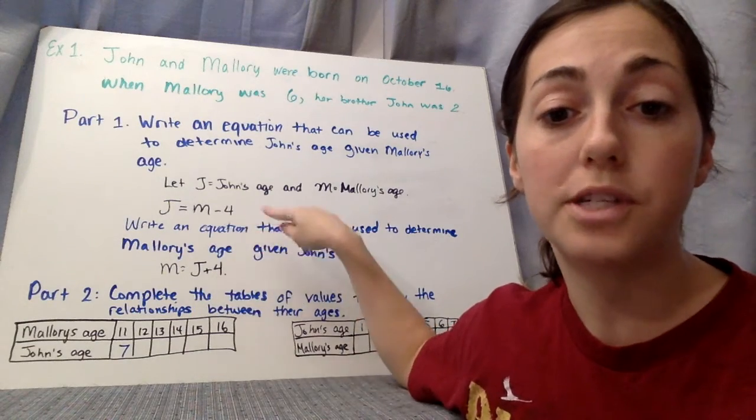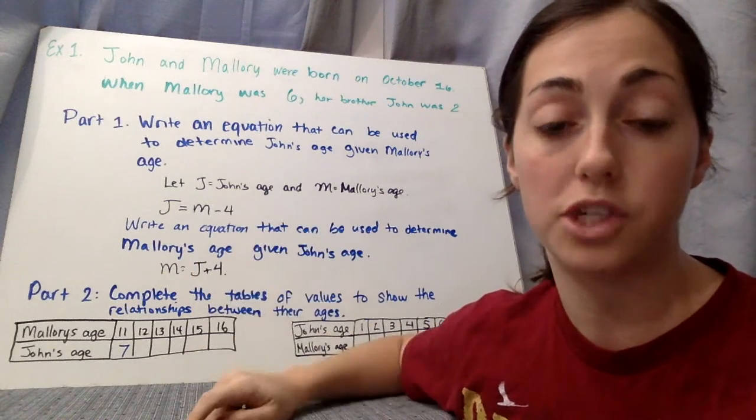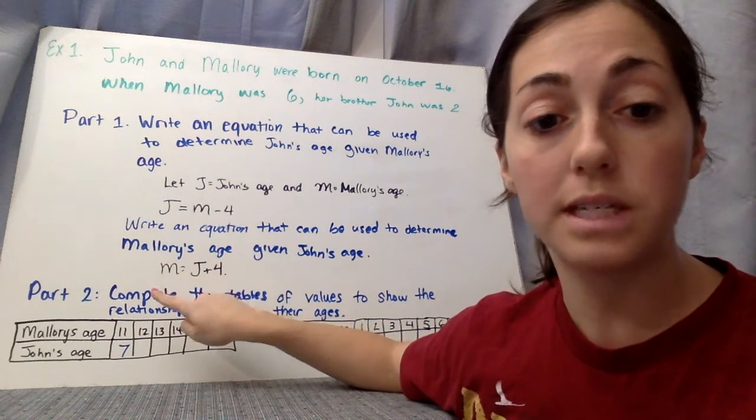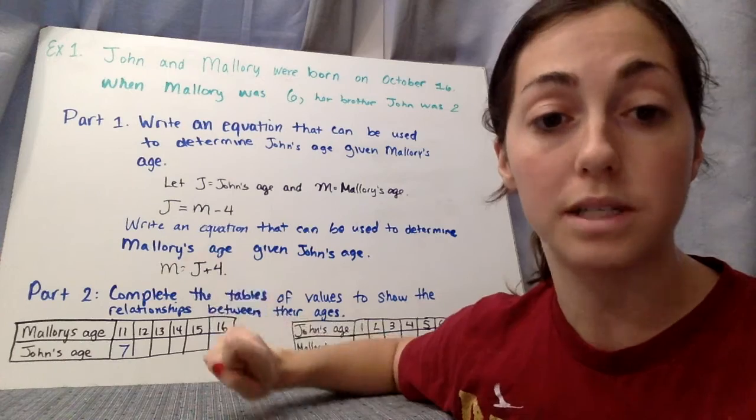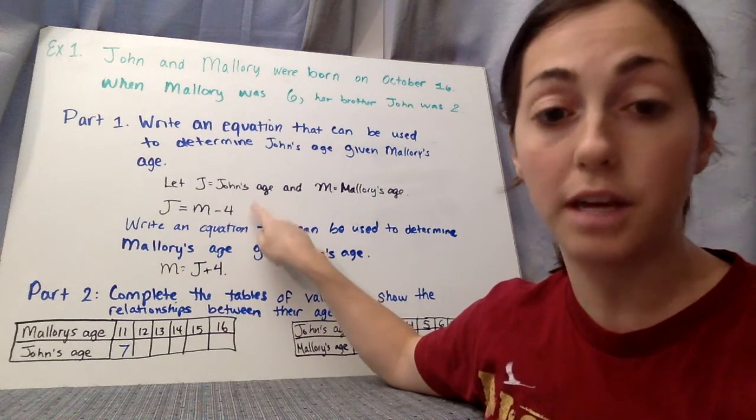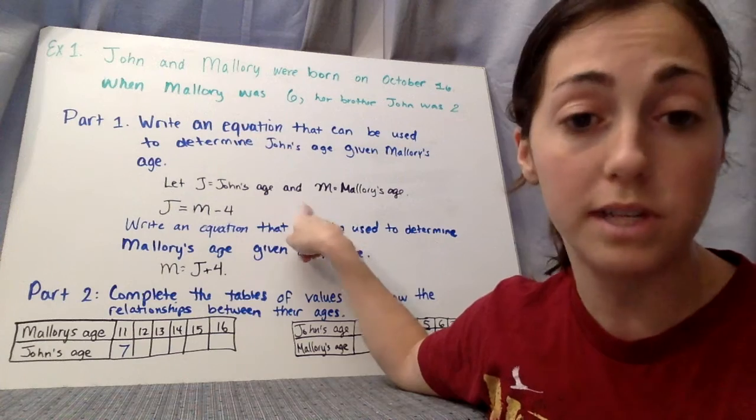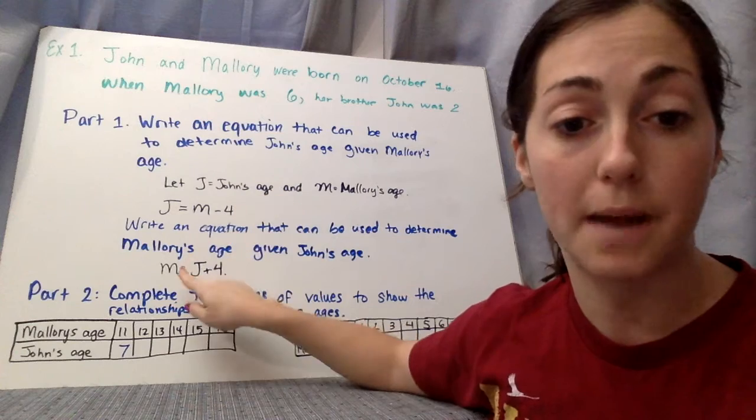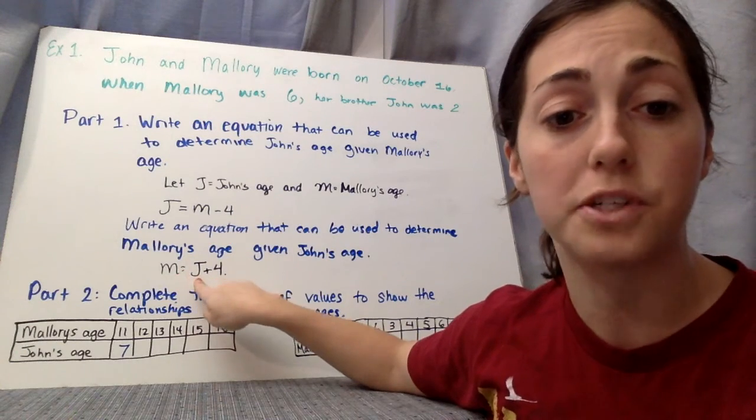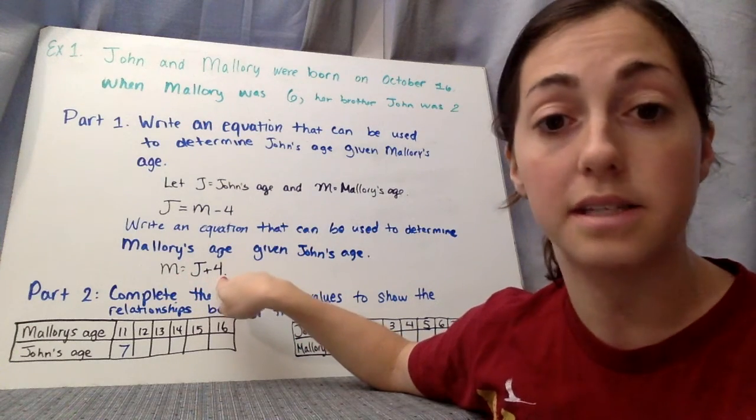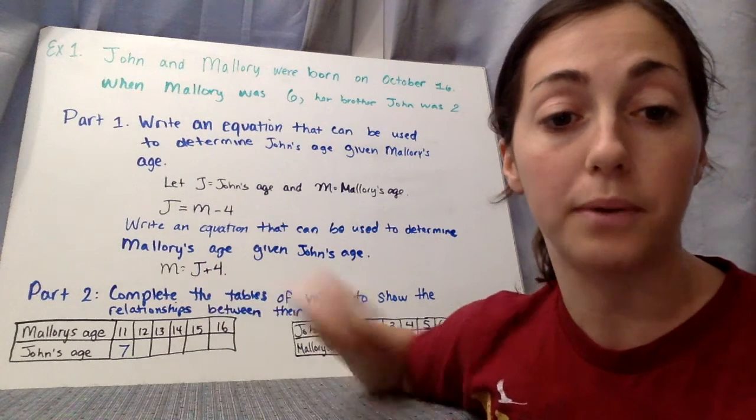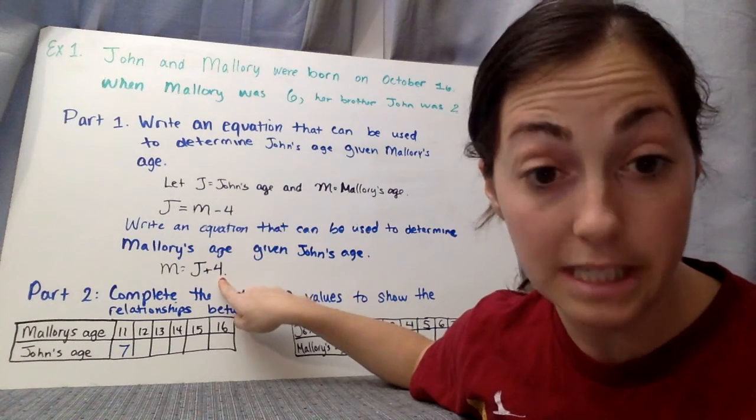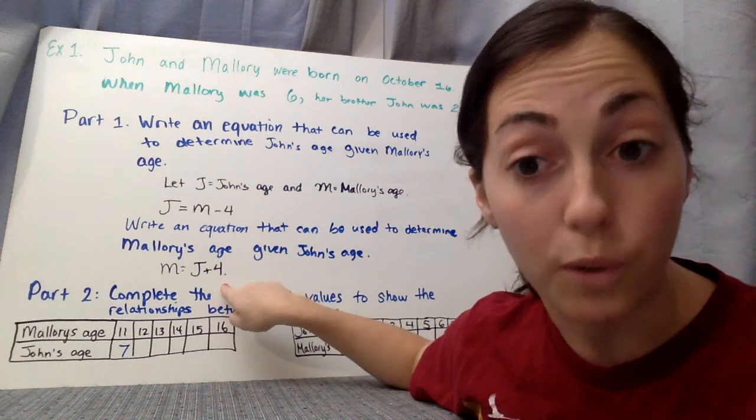Okay, the second part. Write an equation that could be used to determine Mallory's age, given John's age. So this is the same thing, but slightly different. Because we want to be given Mallory's age, it should be m equals. Same line up, with j equaling John's age and m equaling Mallory's age. Those rules that we determined aren't changing, so I have m equals j plus 4 in this case. So if John is 2, 2 plus 4 gives me Mallory, which is 6. If John is 10, that means Mallory is 10 plus 4, which is 14. Good.